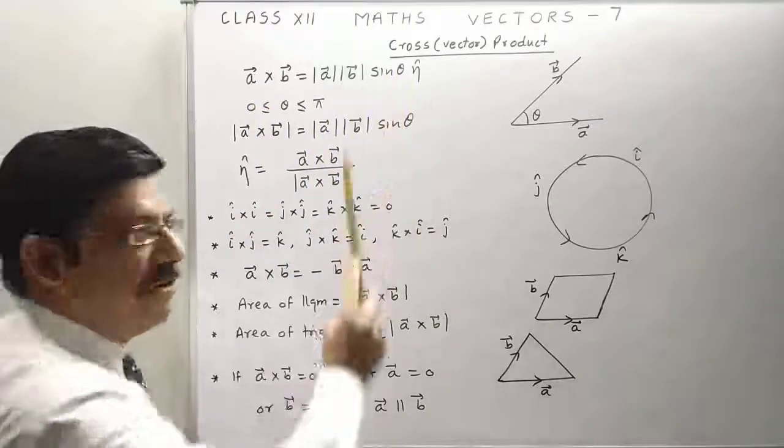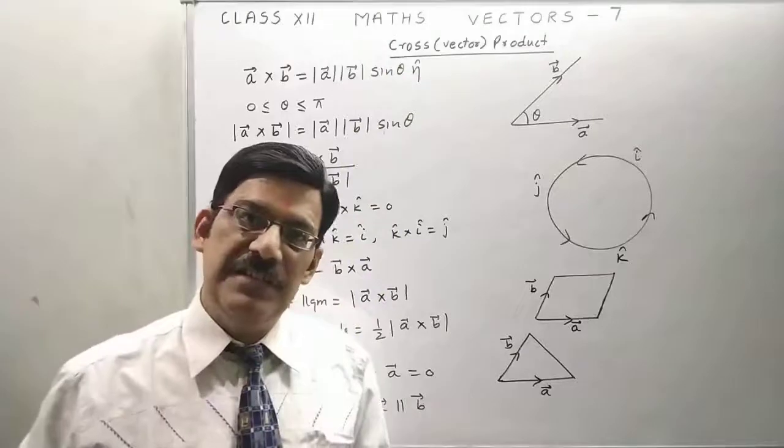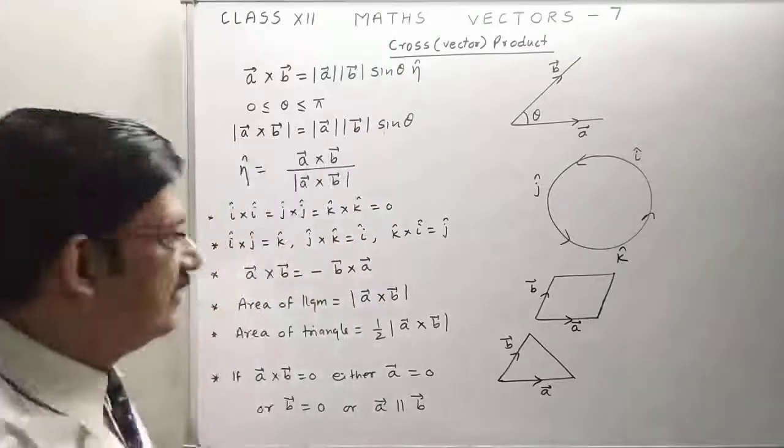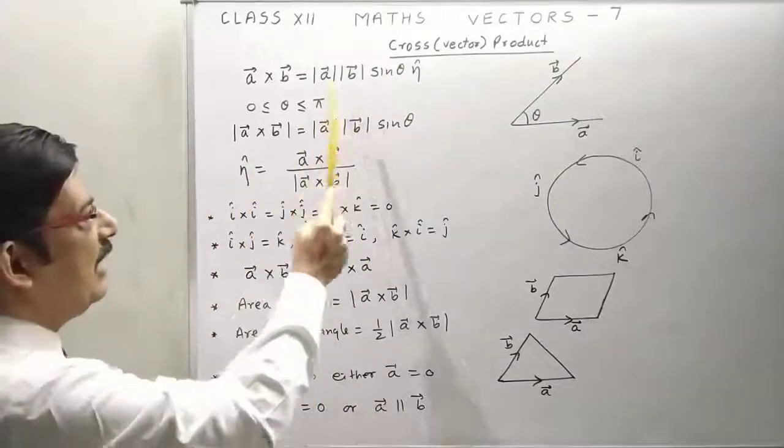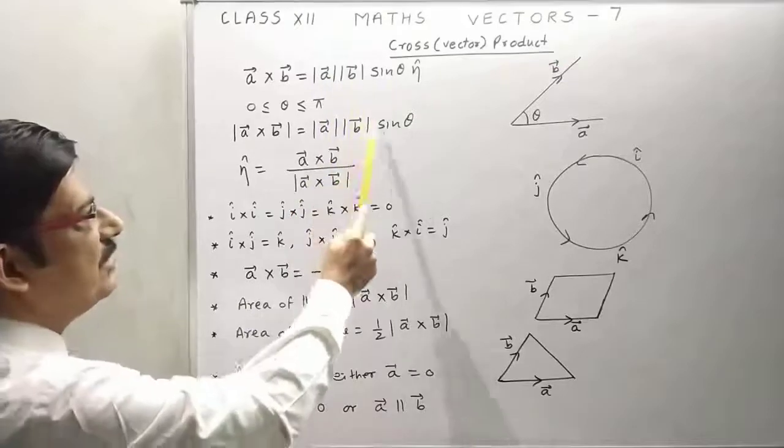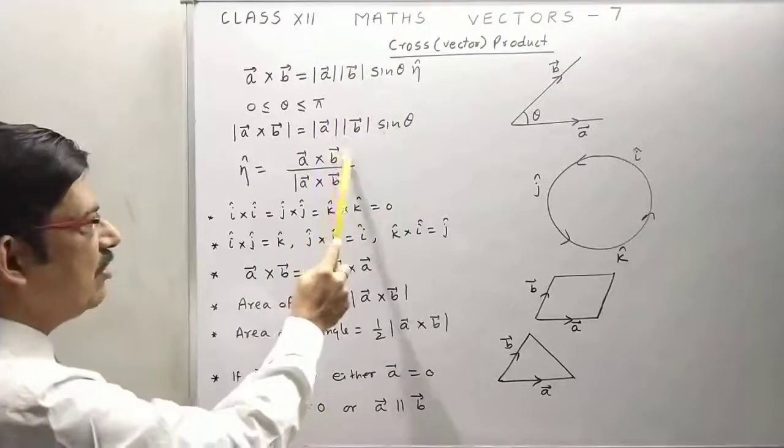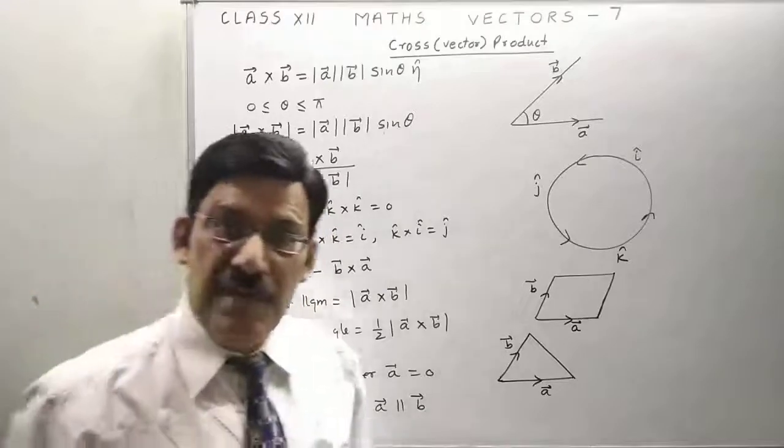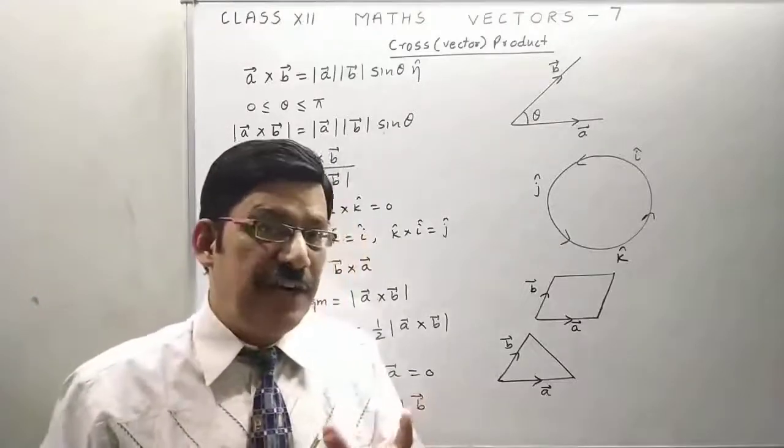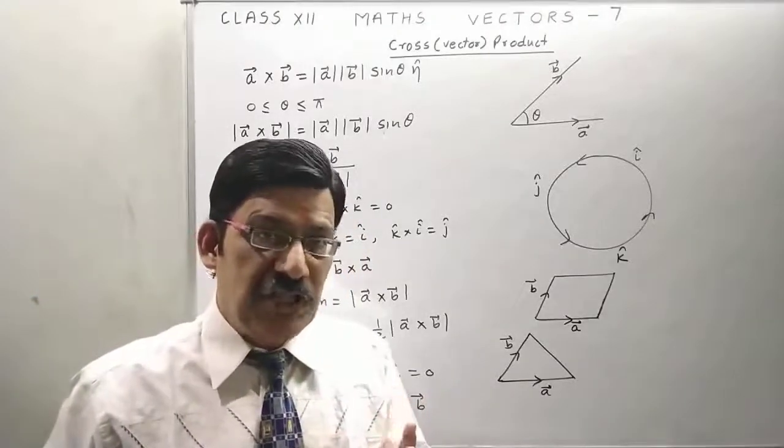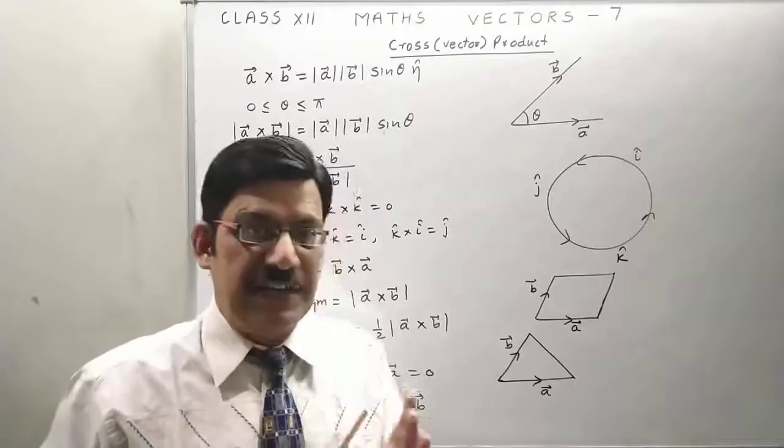Now take magnitude of a cross B. Magnitude of a, B, sine theta will go out because magnitude of eta is one, it's a unit vector. Now we divide both equations, this upon this. We get eta equals a cross B upon mod a cross B. This is a very important formula. Whenever you have to find a unit vector which is perpendicular to both vectors a and B, we use this formula.